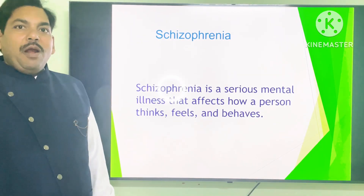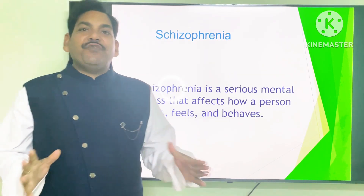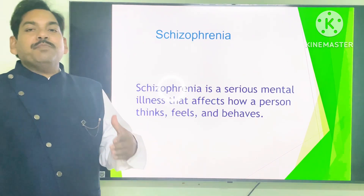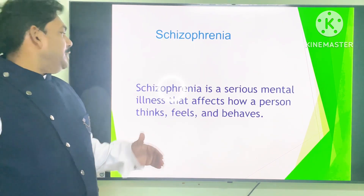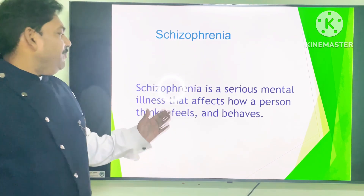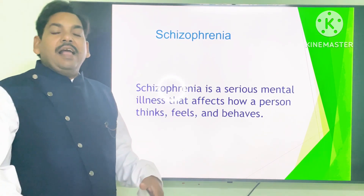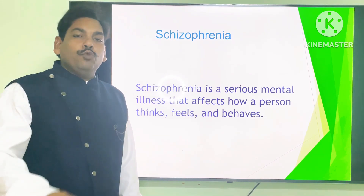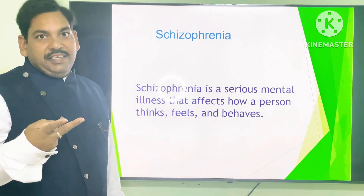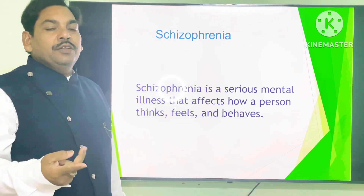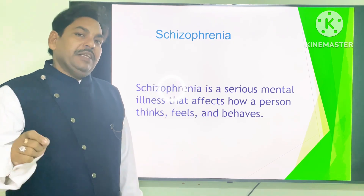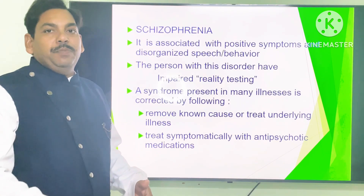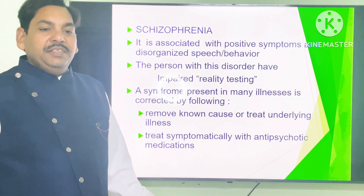Today I discuss schizophrenia. Schizophrenia is a serious mental disorder in which a person's thinking, feeling, and behavior are abnormal. It includes two phases: one is mania, which is the excitation phase, and the second is depression, which is the depressive phase — a loss of interest in anything.